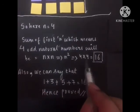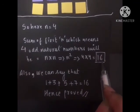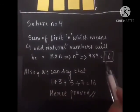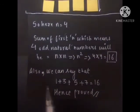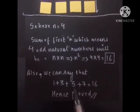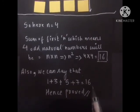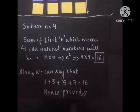So sum of first 4 odd natural numbers will be 16. Also, we can say that 1 plus 3 plus 5 plus 7 equals to 16. Thus, this is proved.